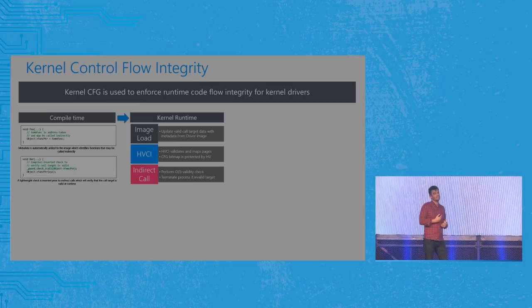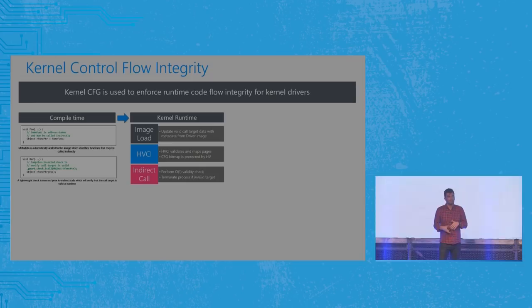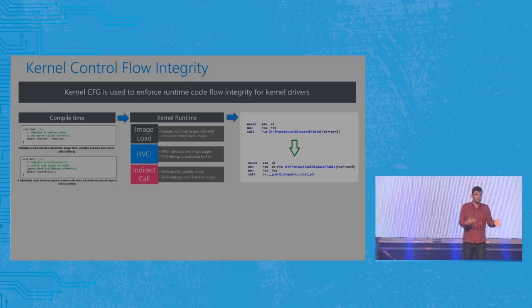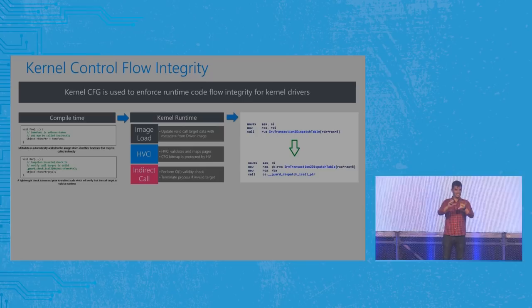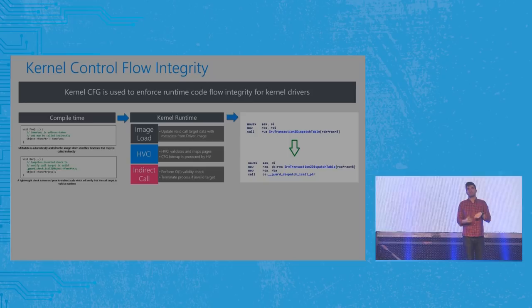This is particularly interesting in the kernel case, because the attackers we're trying to stop are assumed in our threat model to have full control of the kernel. So in kernel space, restricting an attacker from reading or writing kernel memory provides no boundary at all. What we do for Kernel CFG is use the hypervisor to protect the CFG bitmap.